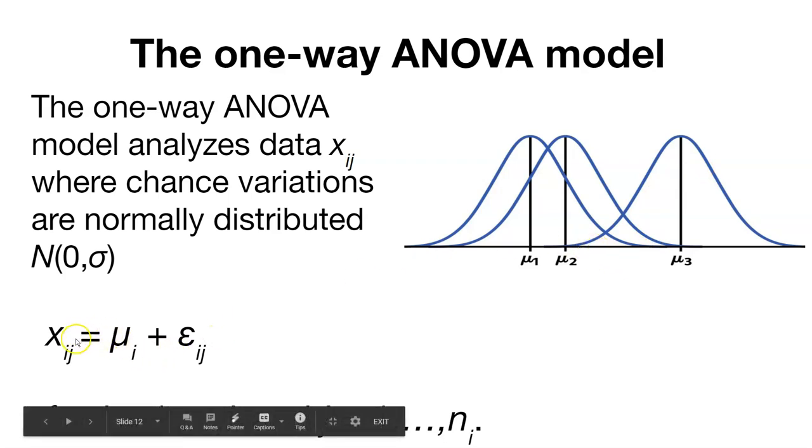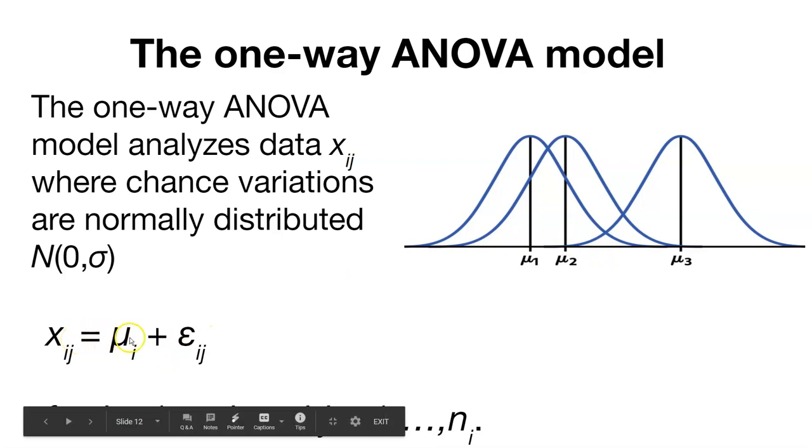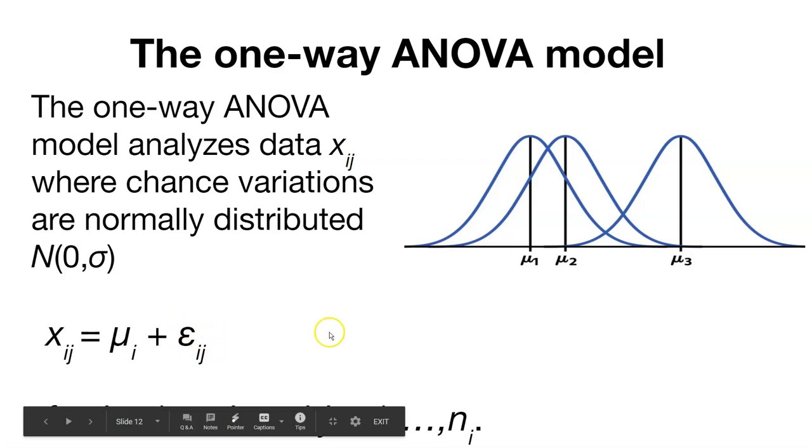We can say each one, X sub i,j, equals some population mean that we're interested in for the i-th population, along with some random error, which we denote by epsilon.